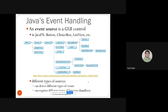In JavaFX, an event source is any GUI control — buttons, choice boxes, lists, and so on. Anything that is a subclass of Control: Control is a subclass of Parent, which is a subclass of Node. Anything under Control — labeled (meaning buttons or labels), scroll bars, sliders, text input controls (text areas or text fields), list views, combo boxes — they are all sources of events and can be used to execute code in an event handler when the control is interacted with.